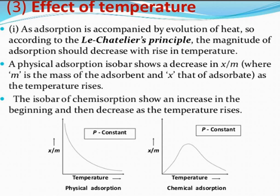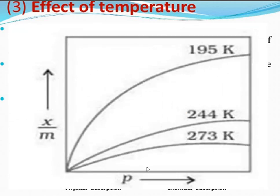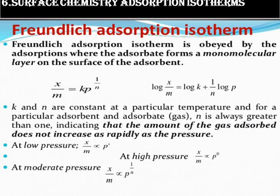The effect of temperature: adsorption is explained by Le Chatelier's principle, according to which the magnitude of adsorption decreases with a rise in temperature. A physical adsorption isobar, at constant pressure, shows a decrease as temperature rises. For the same gas at different temperatures: at 273 K adsorption is least; at 244 K adsorption increases; at 195 K adsorption is maximum. So at low temperature, adsorption is maximum.